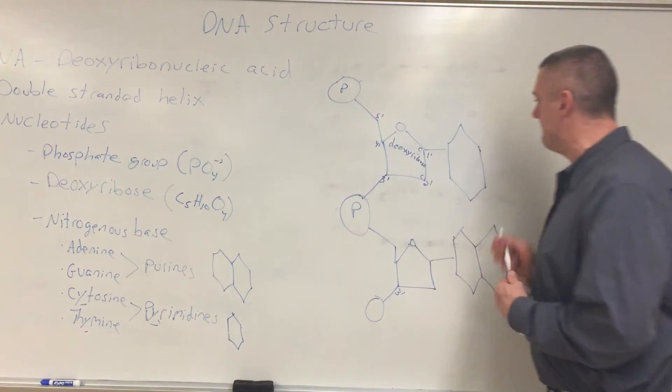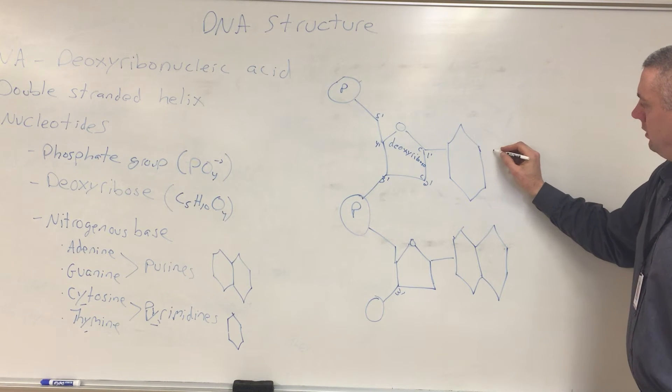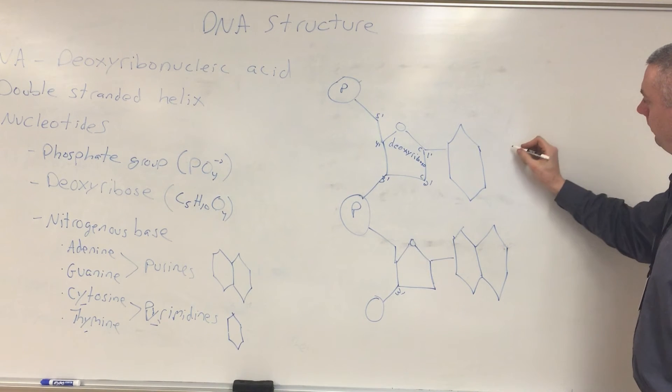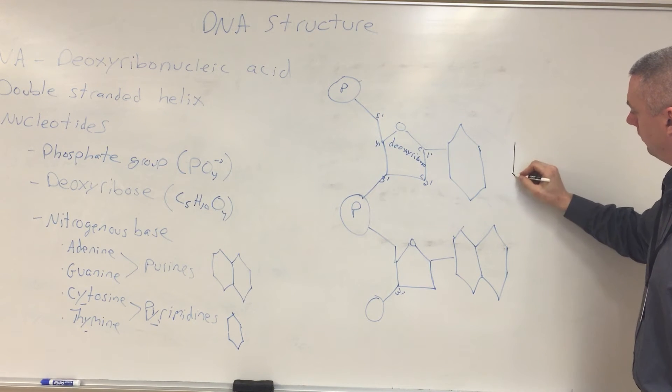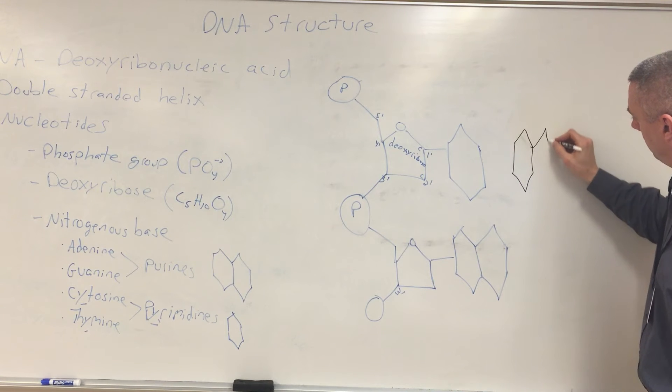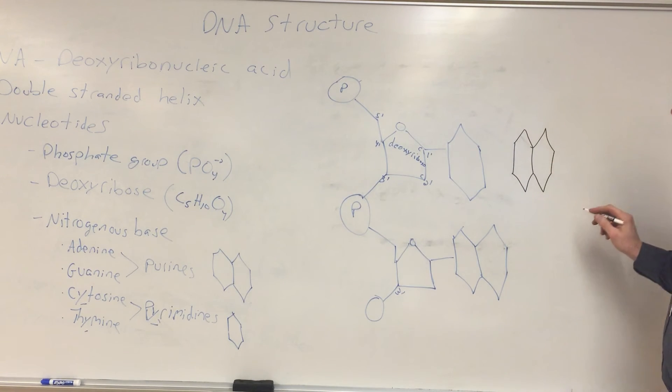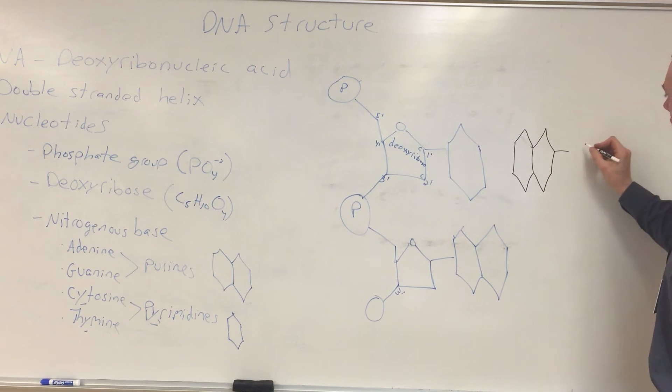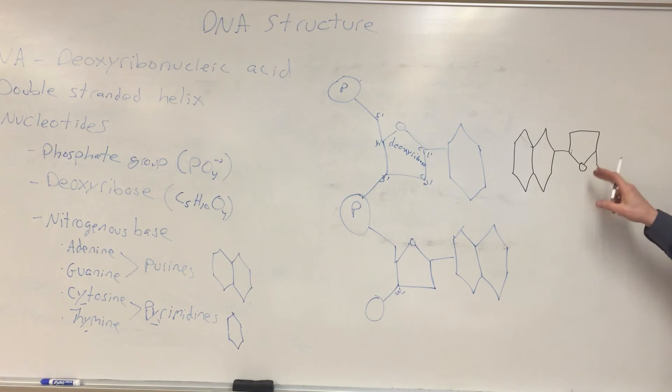So all I've done is drawn two of those. Which carbon is this one right here? The three prime carbon. So this is two nucleotides that are making up a strand. But remember, we need two strands. So we'll draw the other strand over here. The other strand over here.